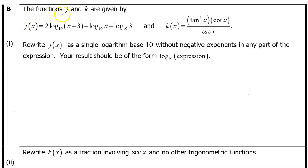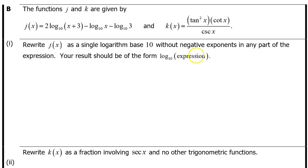Part B. The functions j and k are given. B Part 1: Rewrite j of x as a single logarithm base 10 without negative exponents in any part of the expression. Your result should be of the form log base 10 of some expression. Let's use properties of logarithms to rewrite j of x.